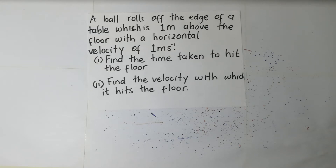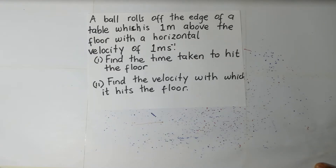In this session we are simply going to answer this question. A ball rolls off the edge of a table which is one meter above the floor with a horizontal velocity of one meter per second. Find the time taken to hit the floor and the velocity with which it hits the floor.